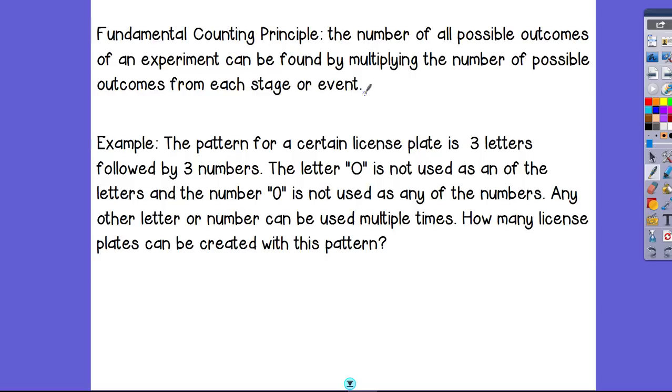The way that you find that number is you multiply the number of possible outcomes from each stage or event. So what that means is maybe you're gonna flip a coin and then roll a dice—those would be two different stages to your experiment.